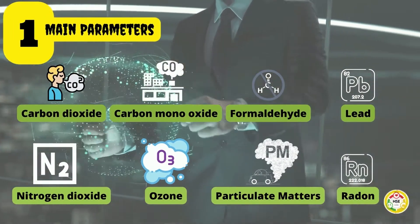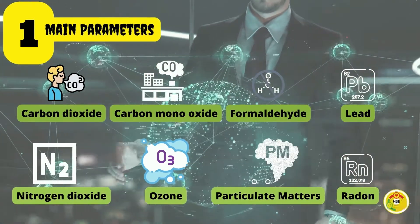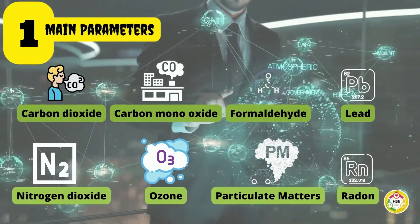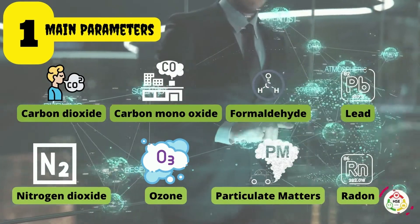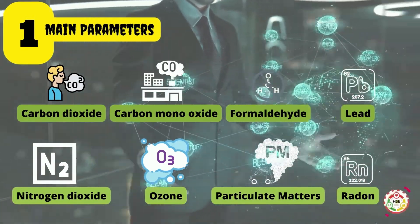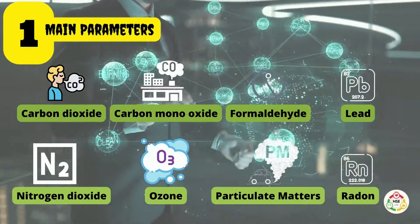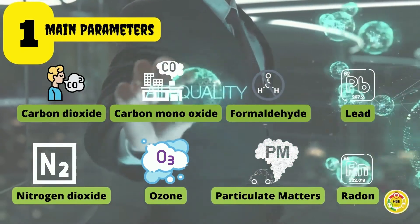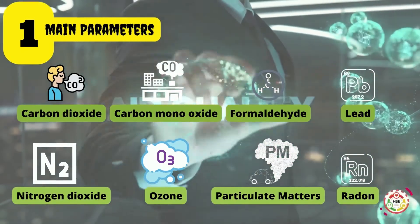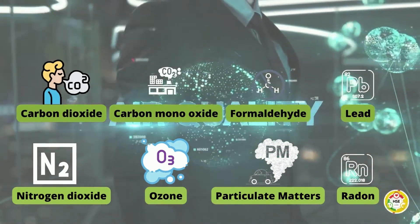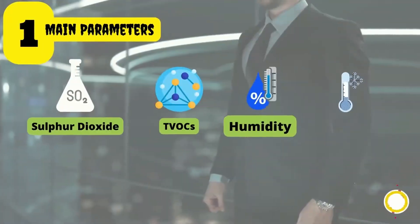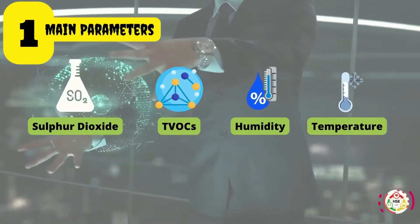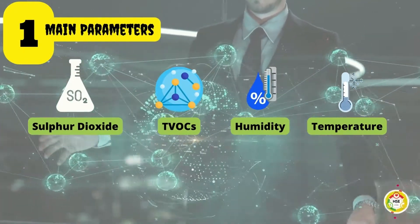Following are the main parameters which contribute to the quality of indoor air: carbon dioxide, carbon monoxide, formaldehyde, lead, nitrogen dioxide, ozone, particulate matters, radon, sulfur dioxide, volatile organic compounds, humidity, and temperature.